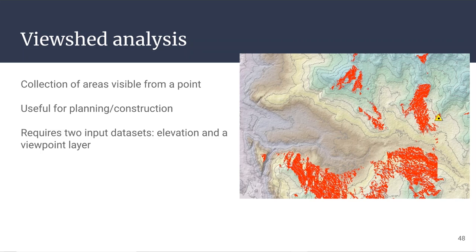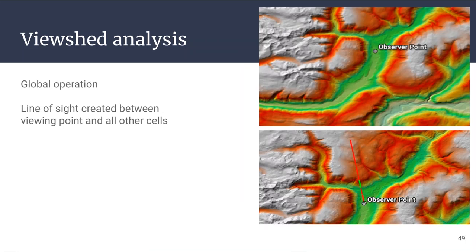To conduct a viewshed analysis requires two layers. You need these input features that make up one or more viewing points, and then you need that DEM layer. This is an example of something where you can't only use a DEM. You also have to use points of interest to see what's visible from those points. And unlike earlier operations that we talked about today, this viewshed analysis is a global operation. That means for each cell that you're computing a value for, every other cell is visited in this analysis.